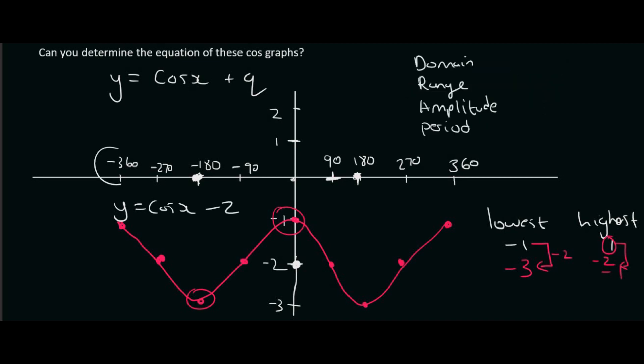The domain will be from minus 360 up to 360, so we say x is an element of [-360, 360]. The range is the y value, so the lowest value is minus 3 and the highest value is minus 1. The amplitude—we need to know the resting position because it's always from the resting position. The resting position is at minus 2.